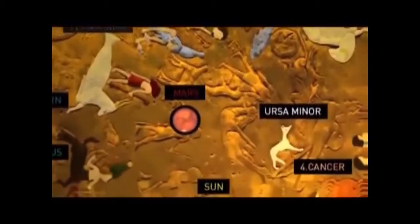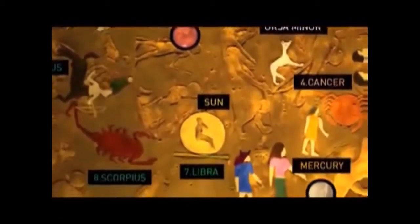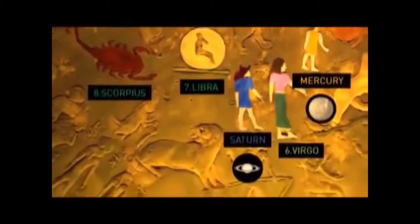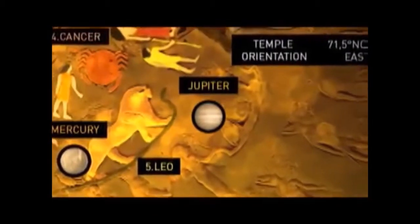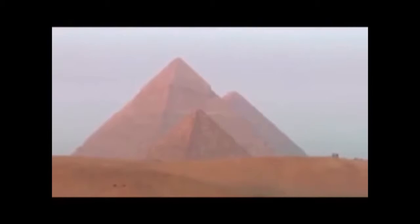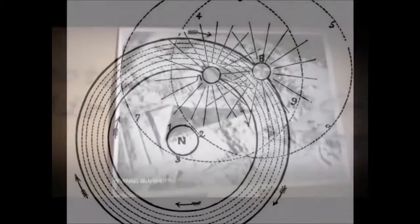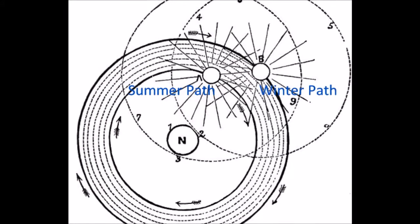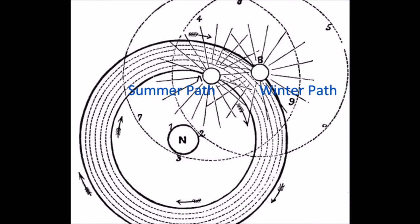We're going to be looking at Zetetic Astronomy today by Parallax, Samuel Birley Rowbotham, Chapter 7: The sun's path expands and contracts daily for six months alternately. This is a matter of absolute certainty, proved by what is called in technical language the northern and southern declination.